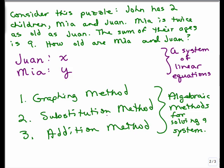So it says has two children, Mia is twice as old as Juan. So Mia's older. So my equation is going to be Mia's age is twice as old as Juan's, so that's 2X.